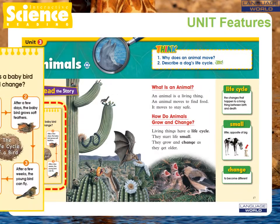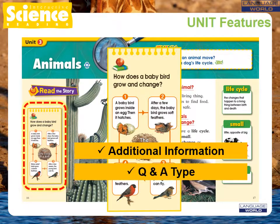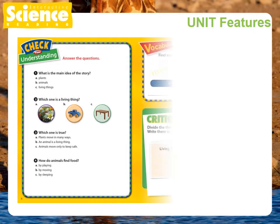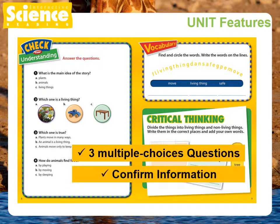Each unit opener offers an additional section of information related to the story through a Q&A type of text, dealing with points that students may raise questions about. The Check Your Understanding section consists of three multiple-choice questions that will confirm if the students have retained the information provided in the unit.